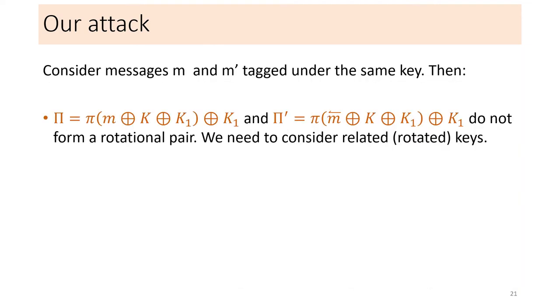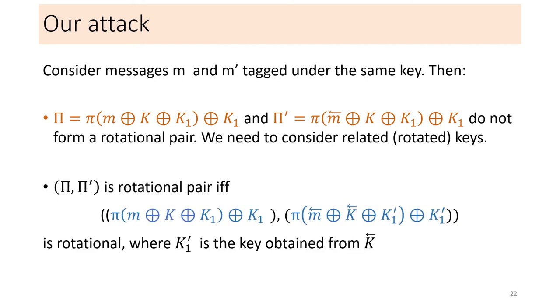Next, we need to evaluate the final rotational probability of the big P. By simply rotating the message, we see that we cannot have a rotational pair of the outputs. Hence, we have to consider also related keys. We need not only the wordwise rotation of M, but also of K and K1 since the XOR preserves the rotational property. Here, K1 is the key derived from K and K1 prime is derived from the rotation of K. So, in order to have a rotational pair, we need K to be such that the key obtained from the rotation of K is equal to the rotation of K1.